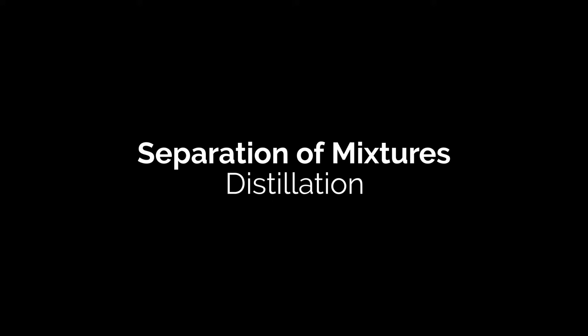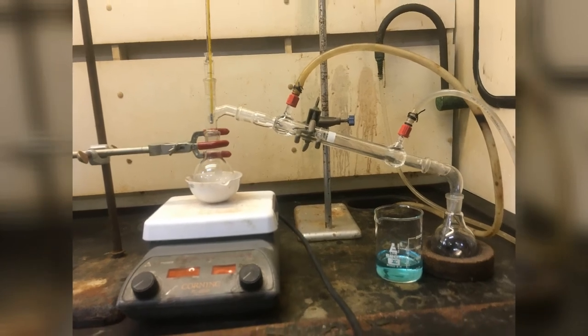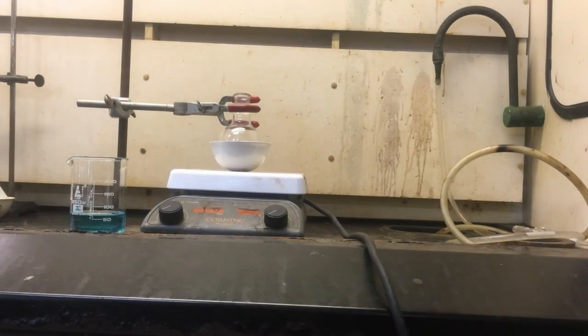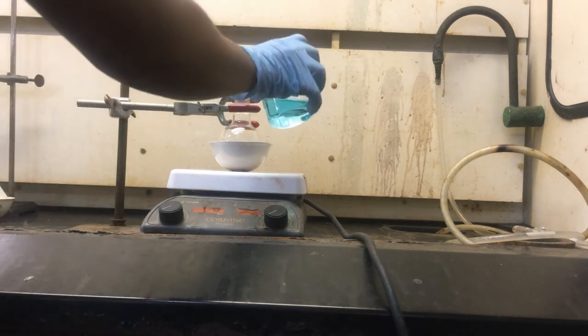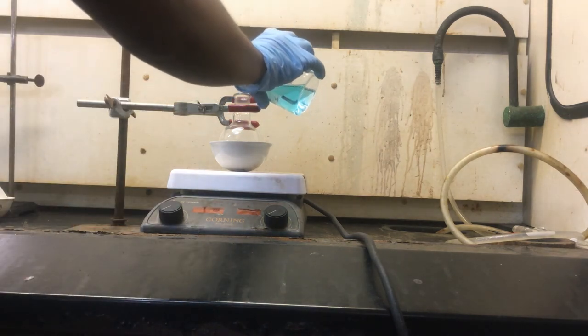Next we move on to distillation and of course this is a picture of the chemicals and glassware that we are working with. First we pour the copper to sulfate solution in a round bottom flask. We are the first round bottom flask.